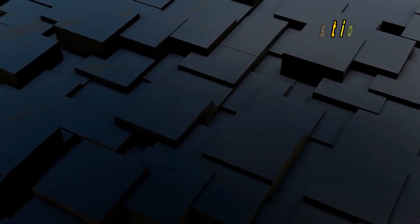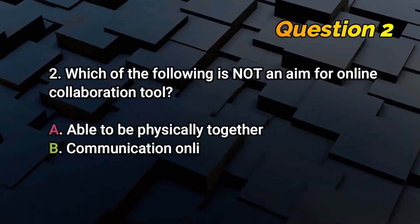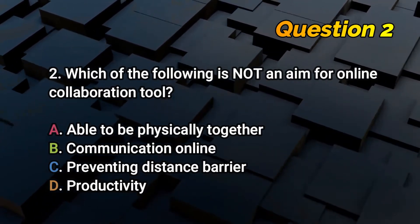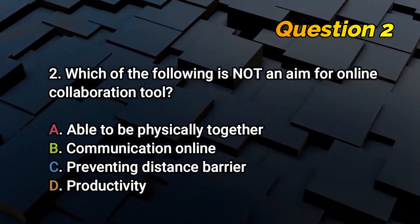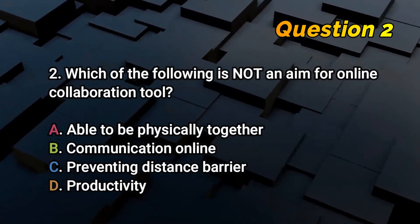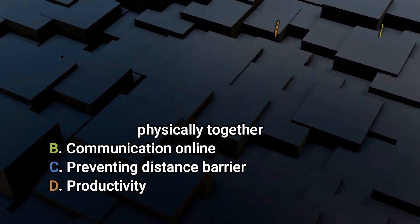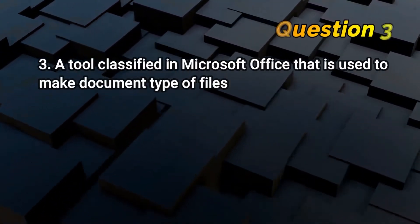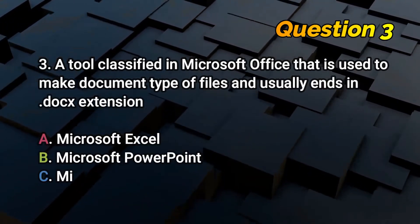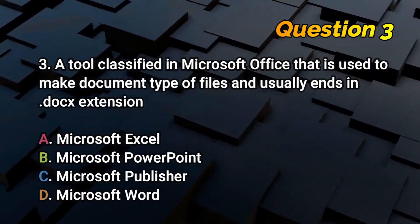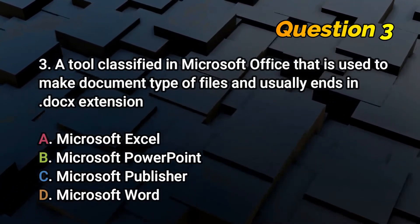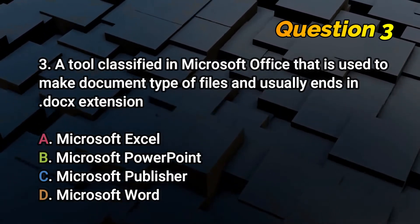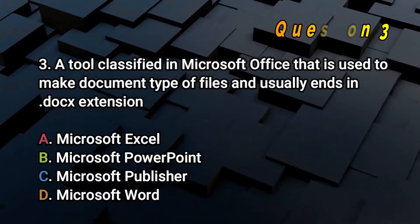Number 2: Which of the following is not an aim for an online collaboration tool? Is it A. Able to be physically together, B. Communication online, C. Preventing distance barrier, or D. Productivity? Number 3: A tool classified in Microsoft Office that is used to make document-type files and usually ends in .docx extension. Is it A. Microsoft Excel, B. Microsoft Publisher, or D. Microsoft Word?